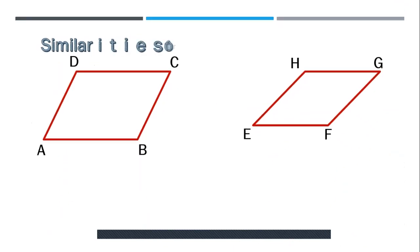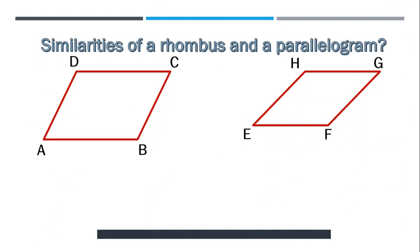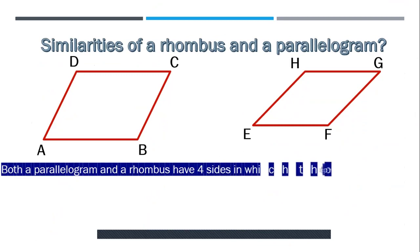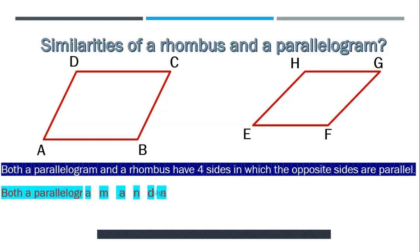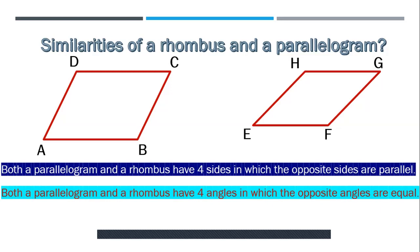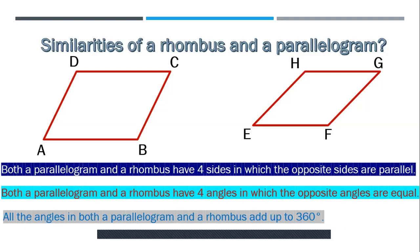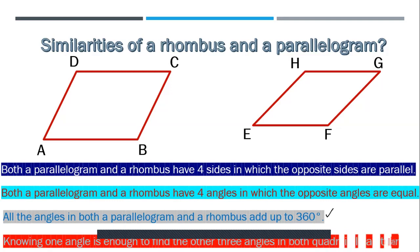So what are the similarities of a rhombus and a parallelogram? Both have four sides in which the opposite sides are parallel — two pairs of parallel sides. In both quadrilaterals, they have four angles in which the opposite angles are equal. All the angles in both a parallelogram and a rhombus add up to 360 degrees — in fact, all quadrilaterals have angles summing to 360 degrees. And knowing one angle is enough to find the other three angles in both quadrilaterals.